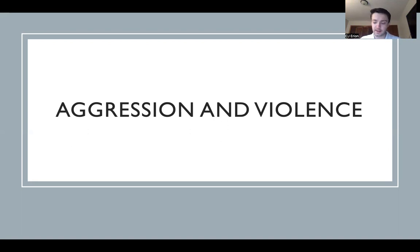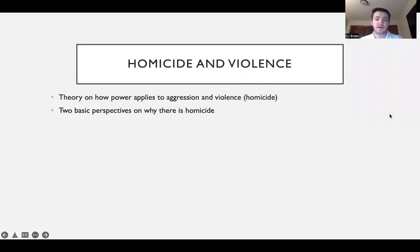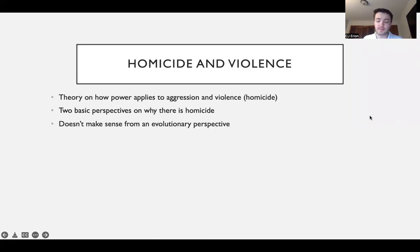We'll also cover some potential reasons for why violence has reduced, much of that being based on Pinker's material, which is your reading for this topic. Getting into theory on how this power topic applies to aggression and violence, specifically homicide — there are two basic perspectives on why homicide occurs. These perspectives are needed because homicide from a general evolutionary perspective doesn't really make sense, as it involves killing off other individuals of the same species.